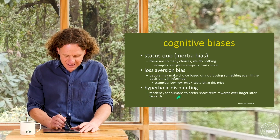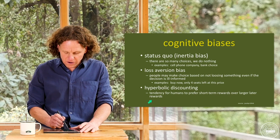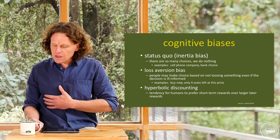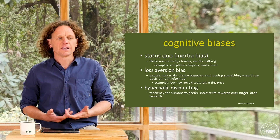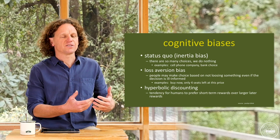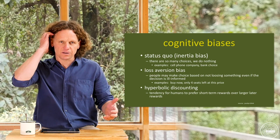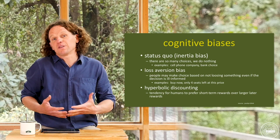Lastly, hyperbolic discounting — this is the tendency for humans to prefer short-term rewards over larger later rewards. It's essentially a way of explaining impulse buys: something you wouldn't normally purchase but it's right there — an ice cream cone, a packet of M&Ms, a Snickers bar. This connects back to the two systems: System 1, the automatic impulsive system, and the more reflective System 2. Sometimes we operate out of System 1 and just impulse buy; other times we reflect and decide something isn't good for us. We fluctuate between those two worlds.